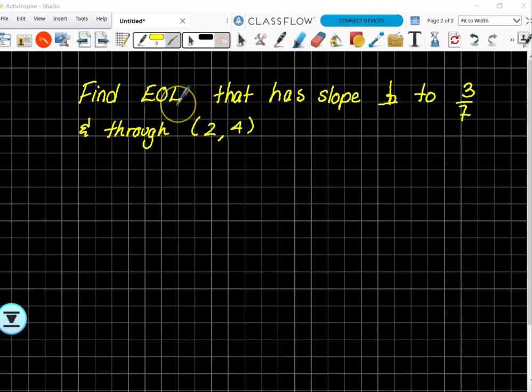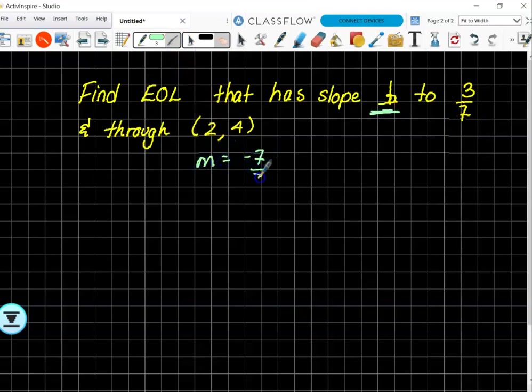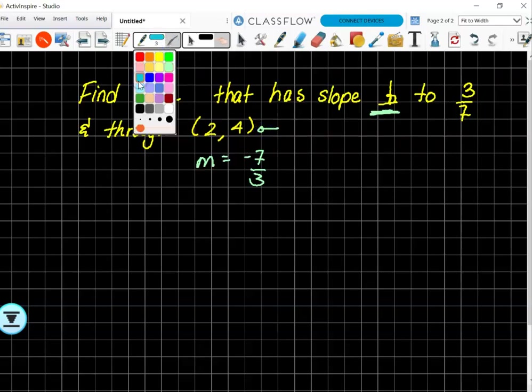Find the equation of the line that has slope perpendicular to 3/7 and passes through the point (2, 4). So what would you do? Yeah, what's the key here? The key was the perpendicular. You're going to then flip and reverse the sign, so your slope will then be -7 over 3. You've got your point, boom boom, do the same thing.